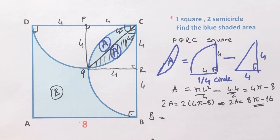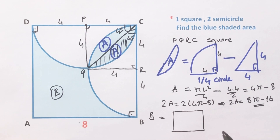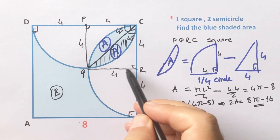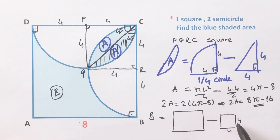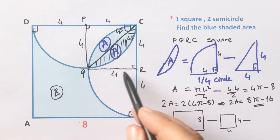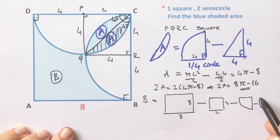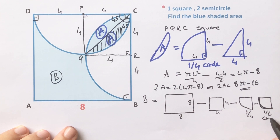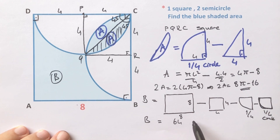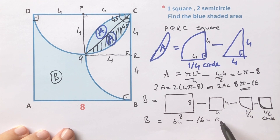Let's call B the rest of the blue shaded area. B equals this large square area minus this small square area — the large square has side 8, the small square has side 4 — minus this quarter circle area and this quarter circle. The sum of these two quarter circle areas equals one semicircle area.